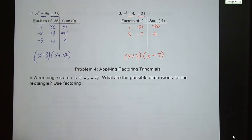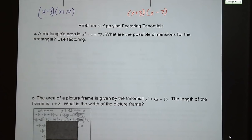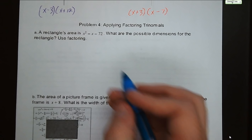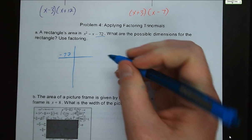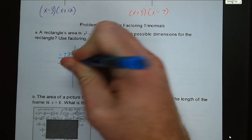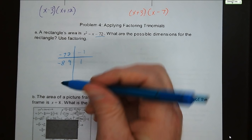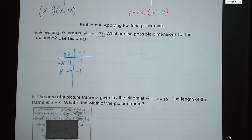Problem 4: applying factoring trinomials. A rectangle's area is x squared minus x minus 72. What are the possible dimensions? We're looking for factors of negative 72 that add up to negative 1. Negative 8 and 9 gives a sum of positive 1, so if I switch the signs - positive 8 and negative 9 - I get a sum of negative 1. So our factors are x plus 8, which is one side length, and x minus 9 is the other.